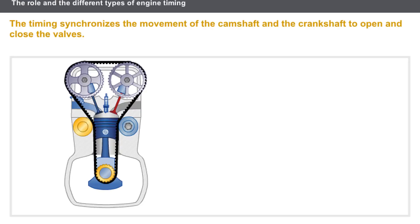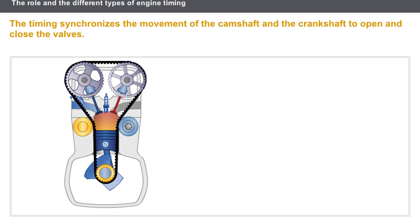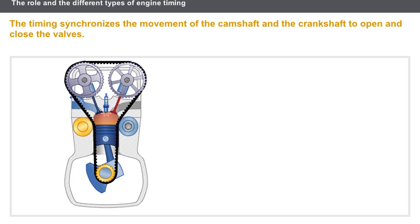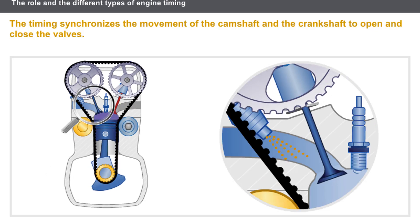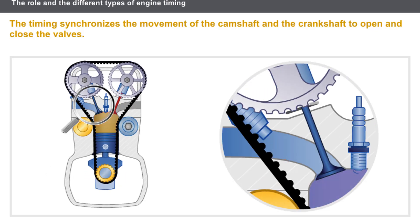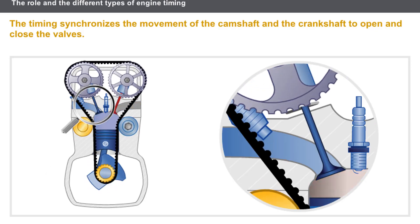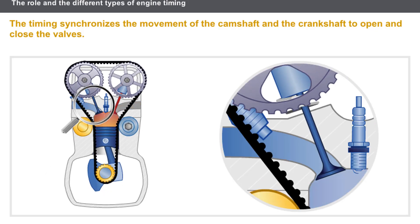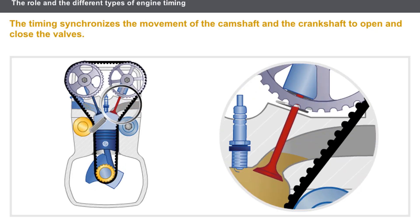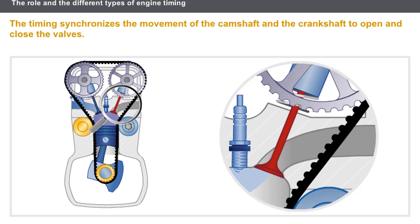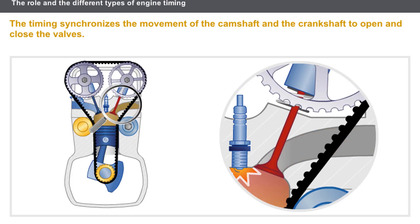First, let's take a look at the role of the engine timing. The timing synchronizes the movement of the camshaft and the crankshaft to open and close the valves. The camshaft controls the inlet valves to allow the entry of fresh gas into the cylinder and the exhaust valves to evacuate the burnt gases.